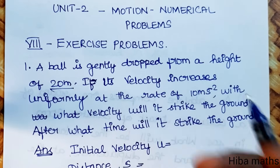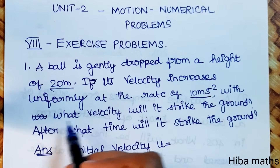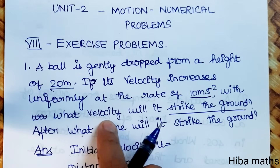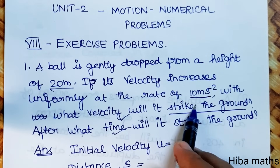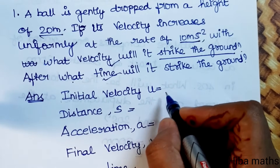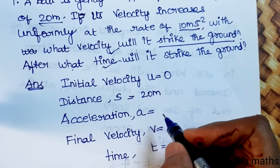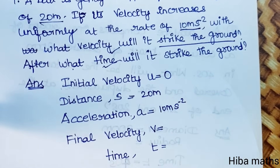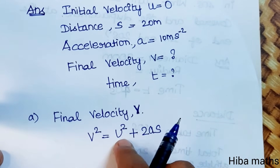Given: initial velocity u is equal to 0, distance s is equal to 20 meters, acceleration a is equal to 10 meters per second square. We need to find the final velocity and the time. For final velocity, we use the formula v square is equal to u square plus 2as.